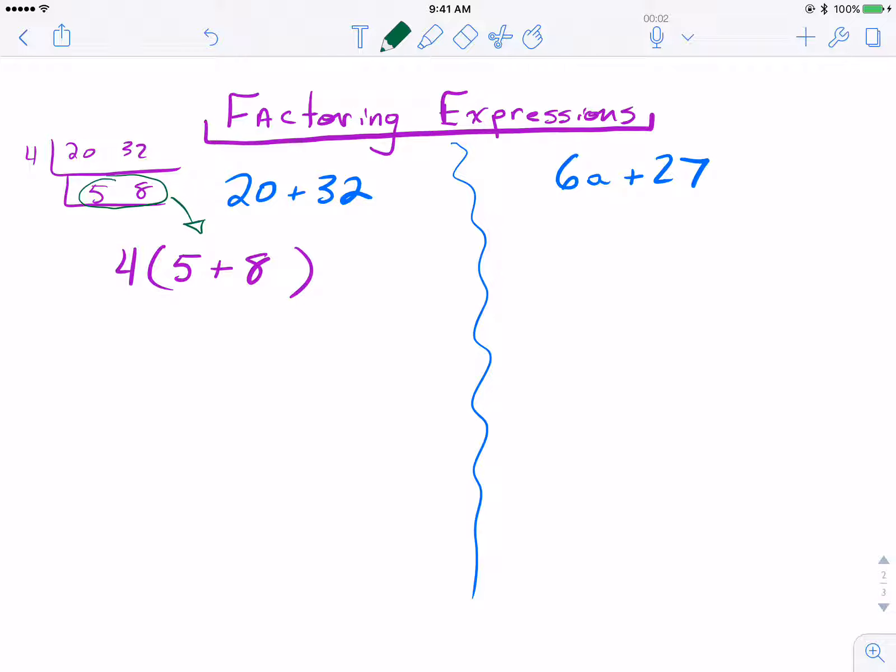So this is also demonstrating the distributive property kind of like in reverse. In other words, if I were to distribute a 4, I'd get exactly what I started with in blue. Also, demonstrating some of the properties of operation here. We can add the 8 and 5, multiply it by 4, and we'll get the same thing as 20 plus 32.